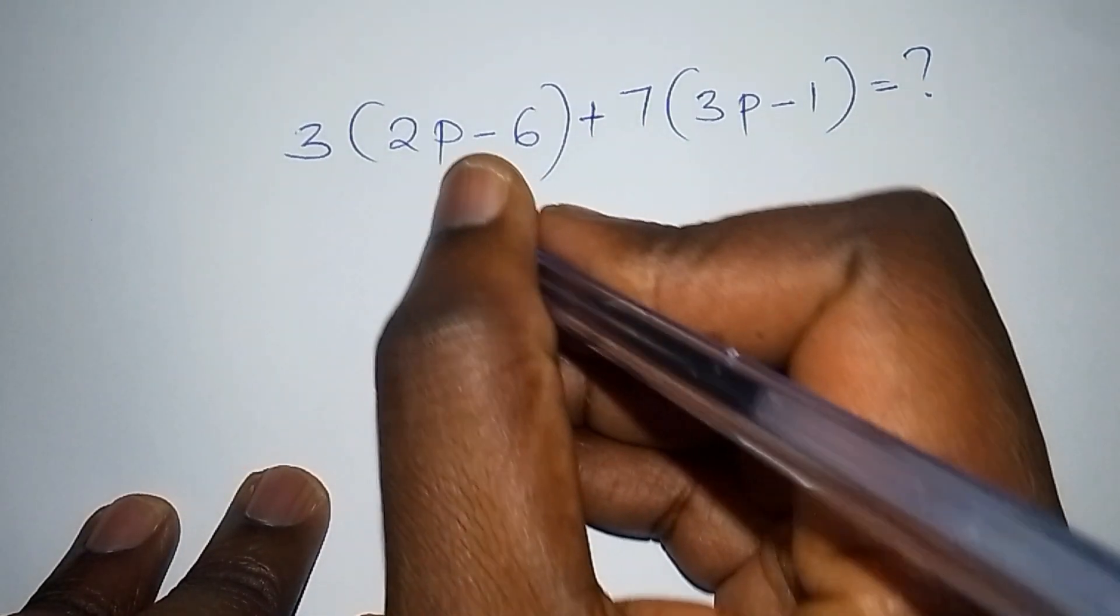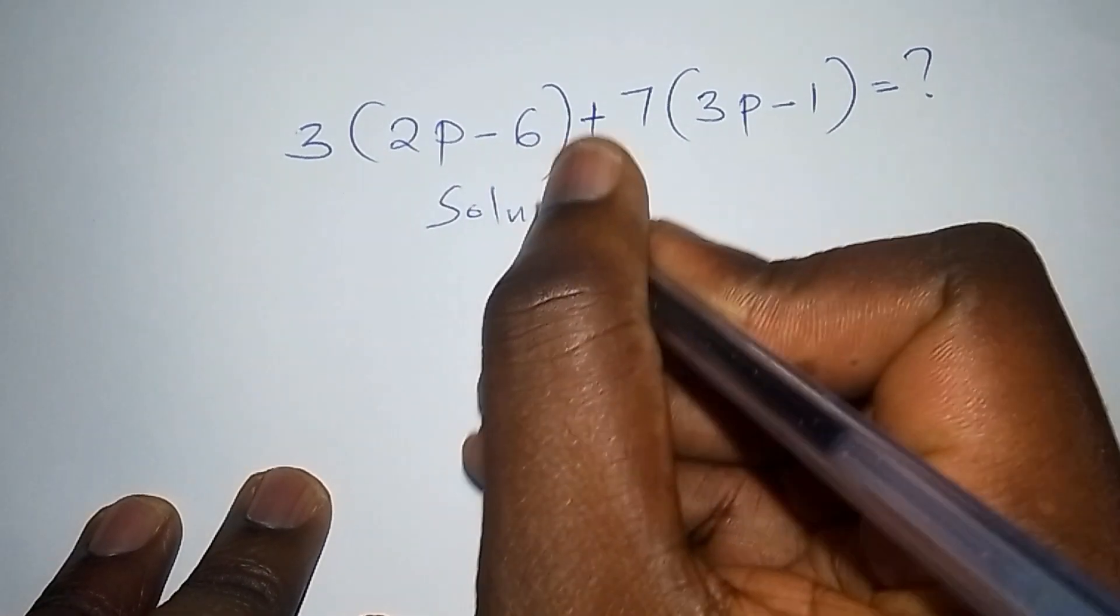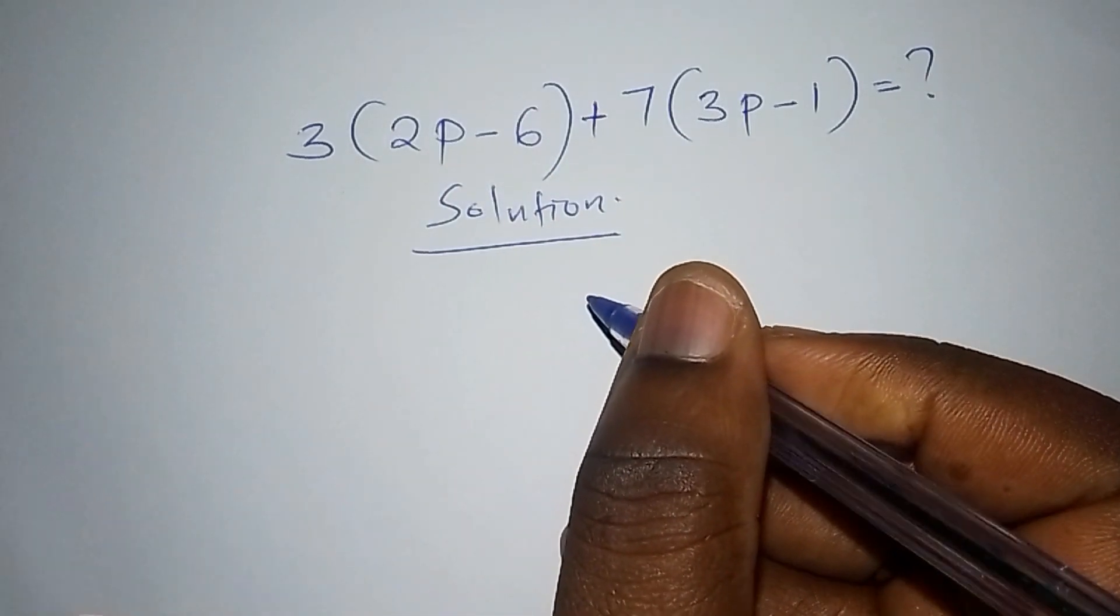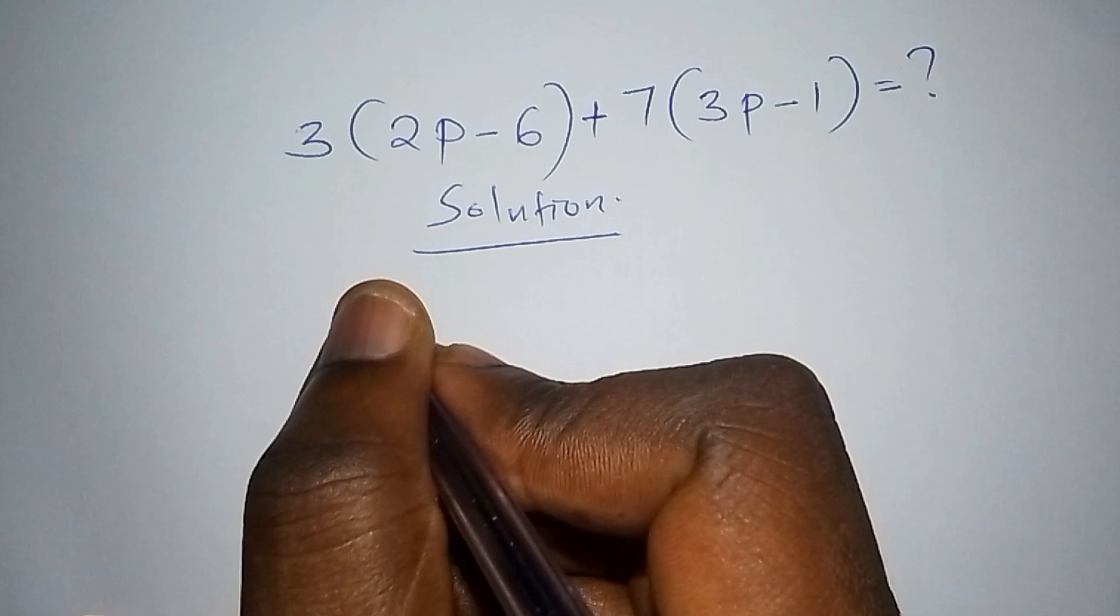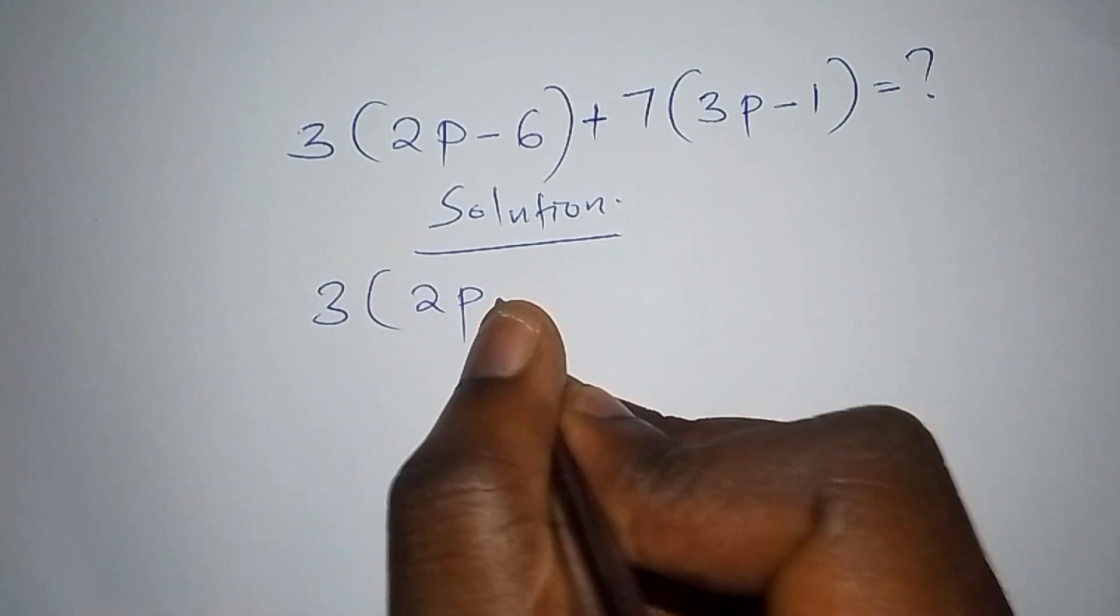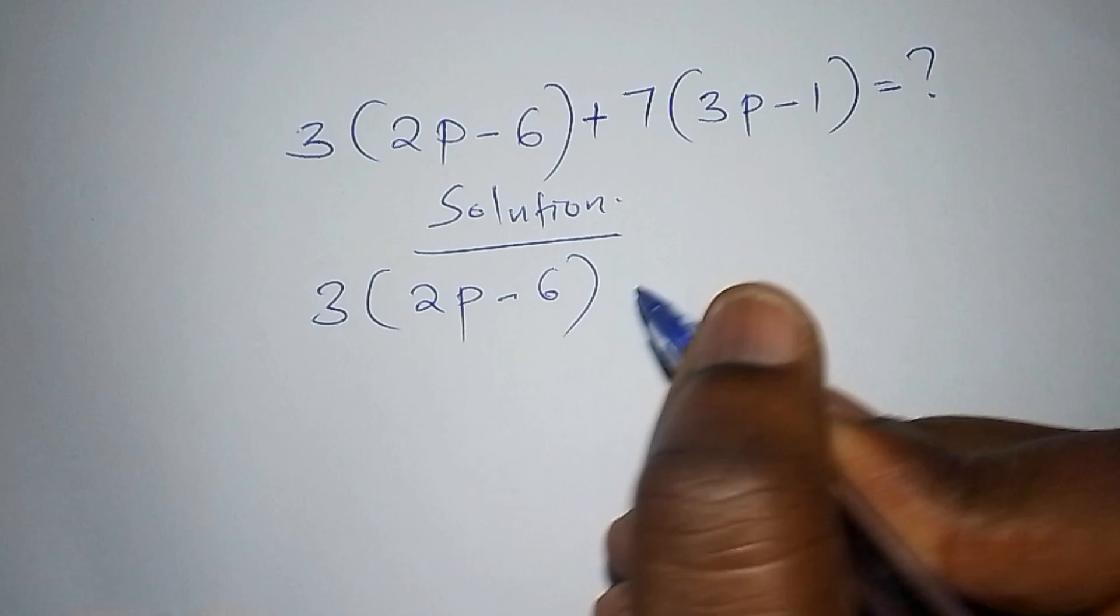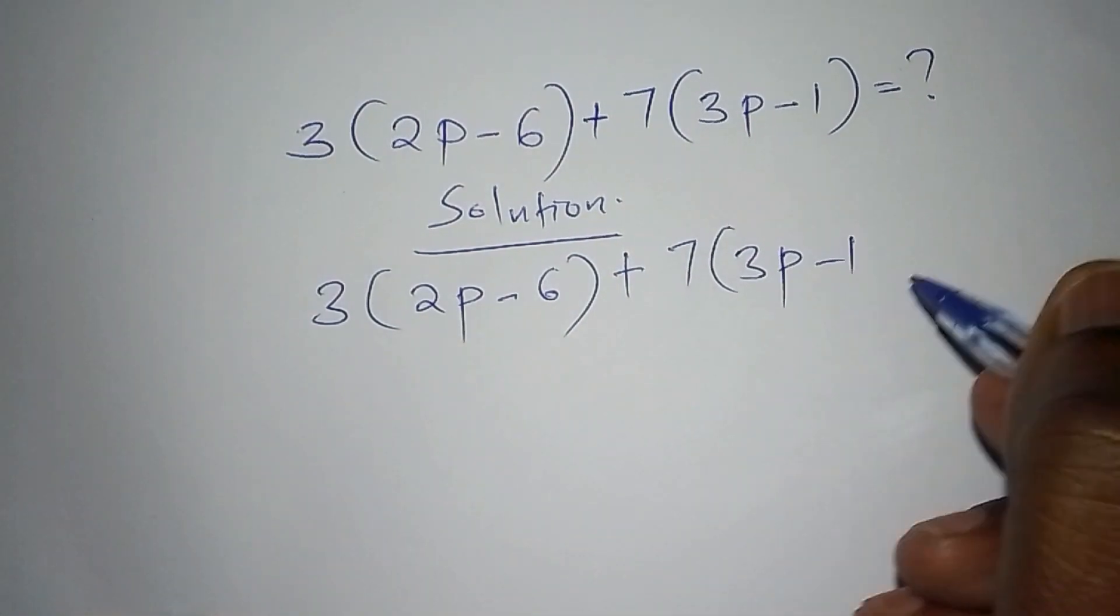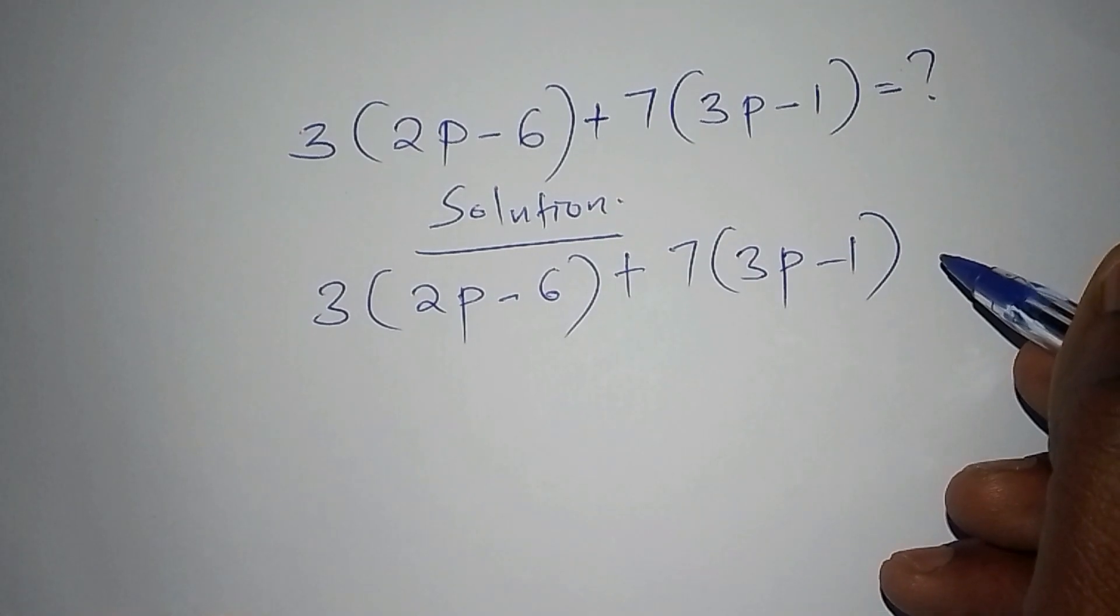The first thing that we're going to start, we're going to start with the solution. Now we shall have our solution there. From the solution, we now write the algebraic problem that we want to tackle: 3 into bracket 2p subtract 6, close the bracket, add to 7 into bracket 3p subtract 1, then close the bracket.